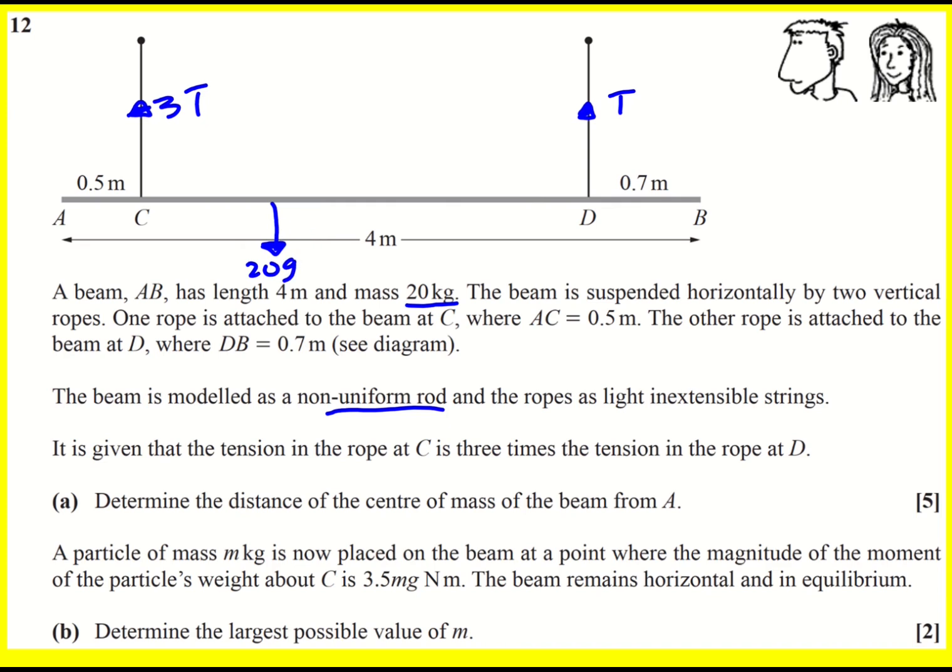There's two things to consider in this kind of problem. Forces, which is an equilibrium because it's suspended horizontally, it's not moving anywhere. It must be that the resultant force is zero in every direction. We might as well just resolve the forces straight away. 3T plus T is going to equal 20g. So 4T is 20g. T is 5g. So I can now write 5g and here 15g.